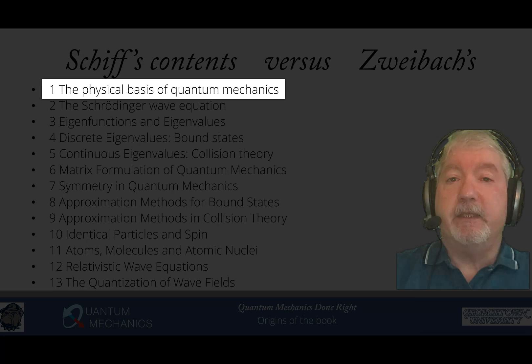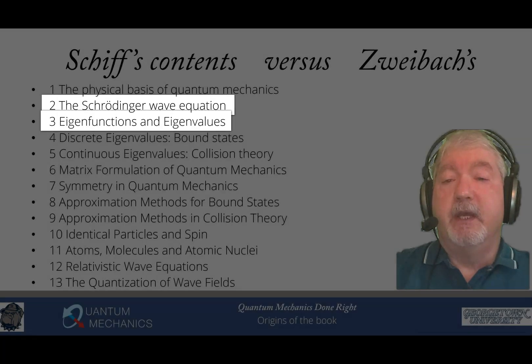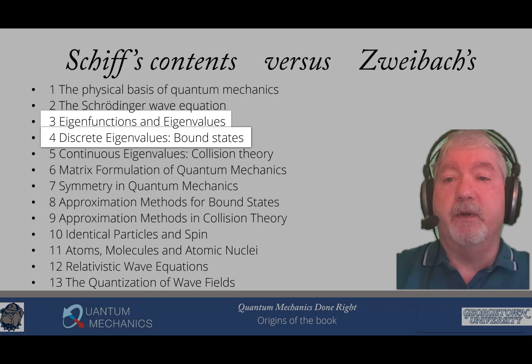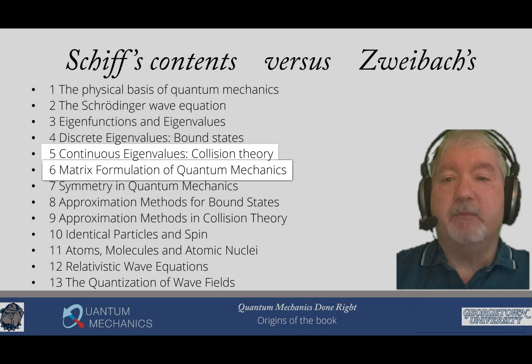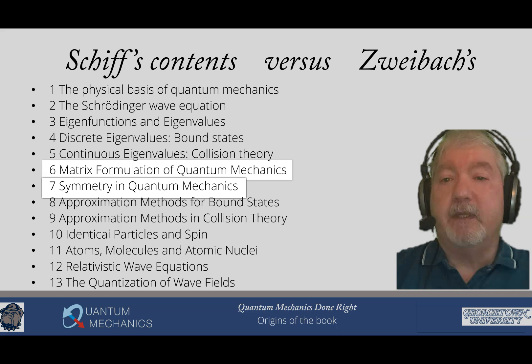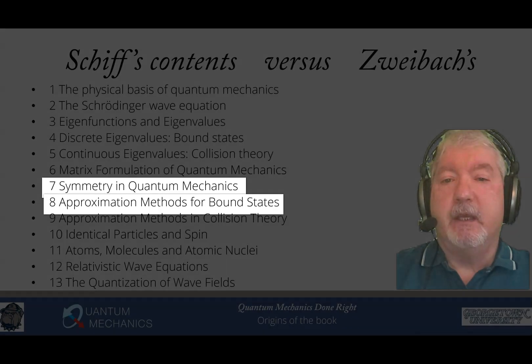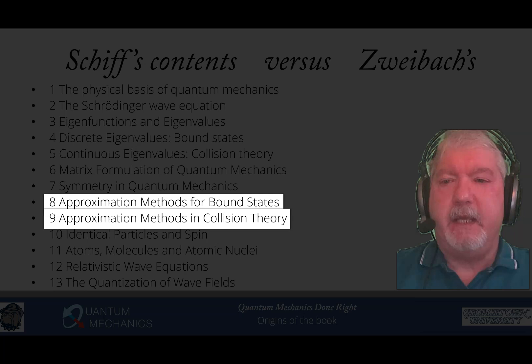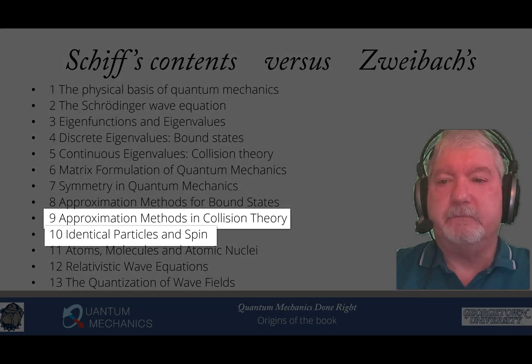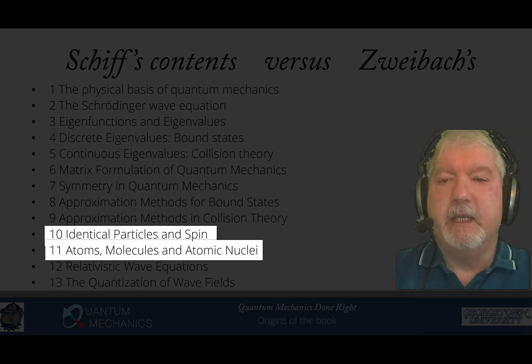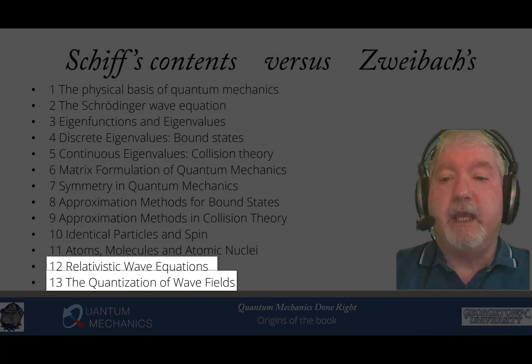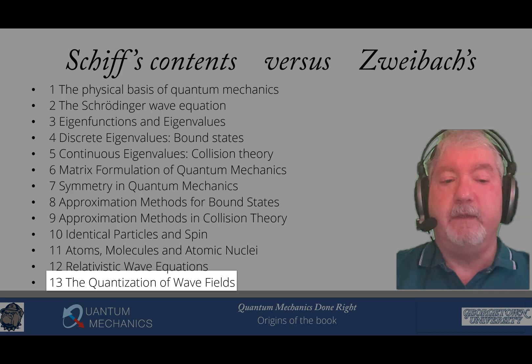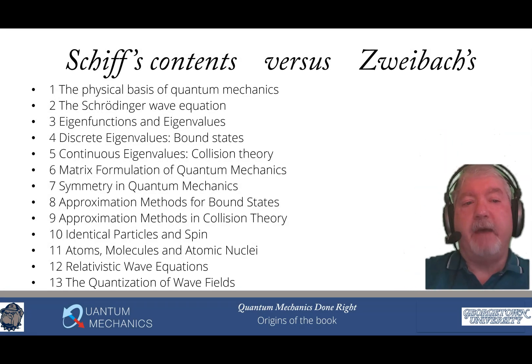There aren't that many chapters, only 13. The first is the physical basis of quantum mechanics. The second is the Schrodinger equation. The third, eigenfunctions and eigenvalues. The fourth, discrete eigenvalues, bound states. The fifth, continuous eigenvalues, collision theory. The sixth, matrix formulation of quantum mechanics. The seventh, symmetry in quantum mechanics. The eighth, approximation methods for bound states. The ninth, approximation methods in collision theory. The tenth, identical particles and spin. The eleventh, atoms, molecules, and atomic nuclei. The twelfth, relativistic wave equations. And the thirteenth, the quantization of wave fields.